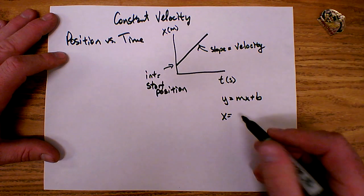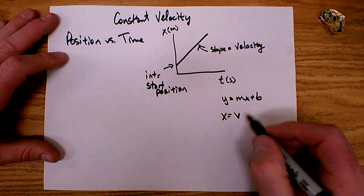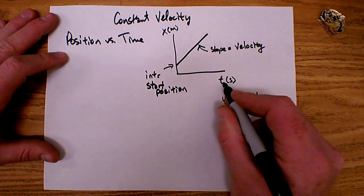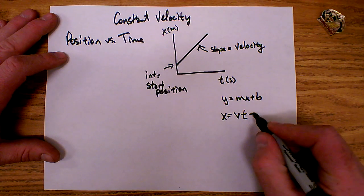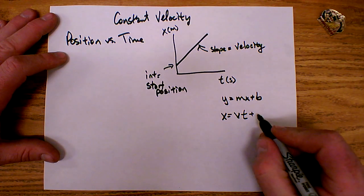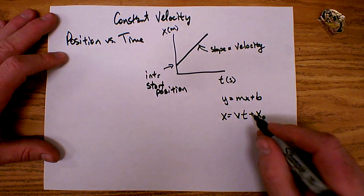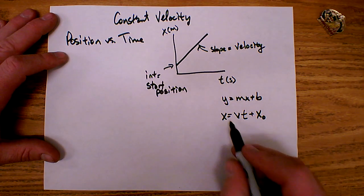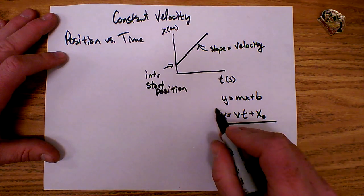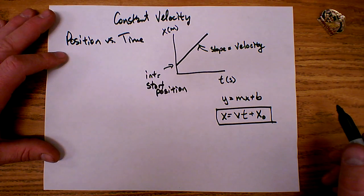The slope represents the velocity — we'll use v for velocity — times the x-axis, which in this case is t, so v times t, plus the intercept, which is the starting position. We'll use x with a little subscript of zero, x-naught, or x-initial. This is the general equation we get from this linear position versus time graph: x = vt + x₀.